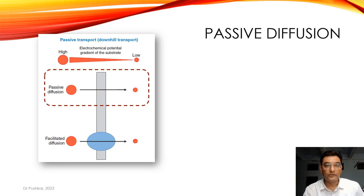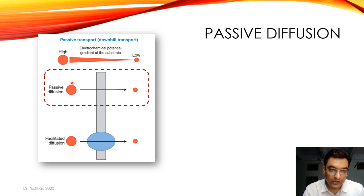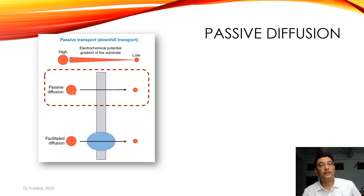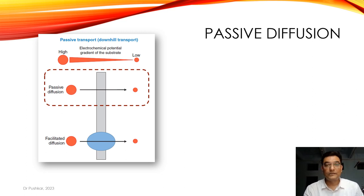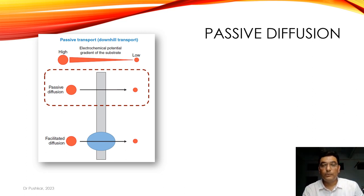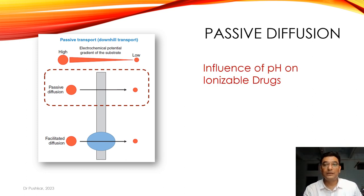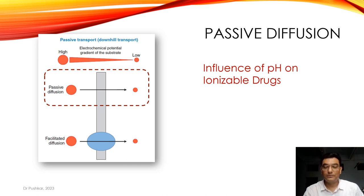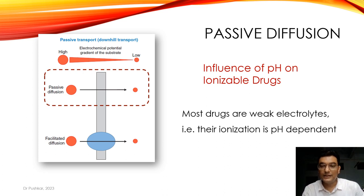In passive diffusion, movement is from higher to lower concentration. For a drug to pass through the membrane, it must be lipid soluble, because our cell membrane is a lipid bilayer. Most drugs pass through this mechanism. Two important factors that play a role are pH and ionization — the pH of the medium and the ionization of the drug. Most drugs are weak electrolytes — either weak acids or weak bases — and their ionization is pH dependent.